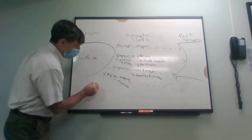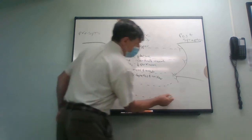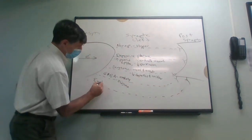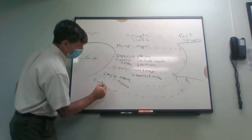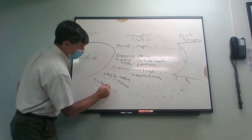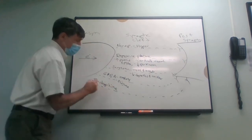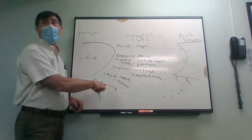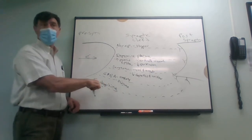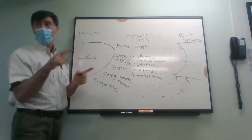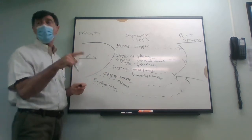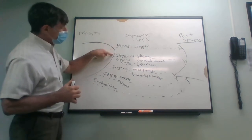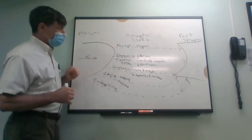Another neurotransmitter is endorphins. 'Endo' means from within, and 'orphine' comes from morphine — so endorphin means morphine from within our brain. Norepinephrine and dopamine are excitatory; serotonin goes both ways; GABA is inhibitory; endorphins are inhibitory.